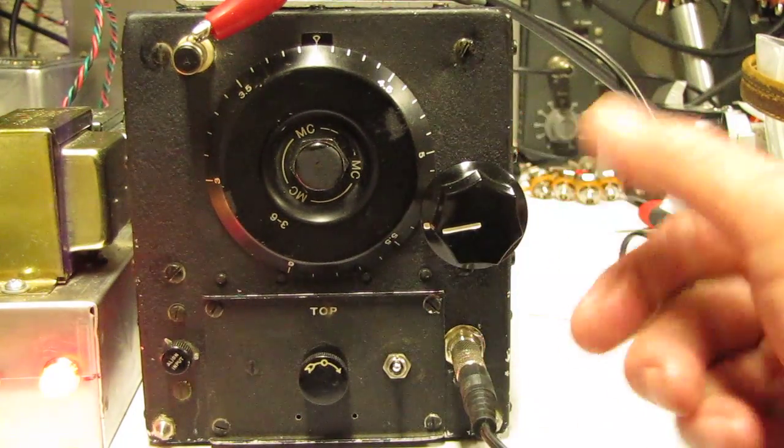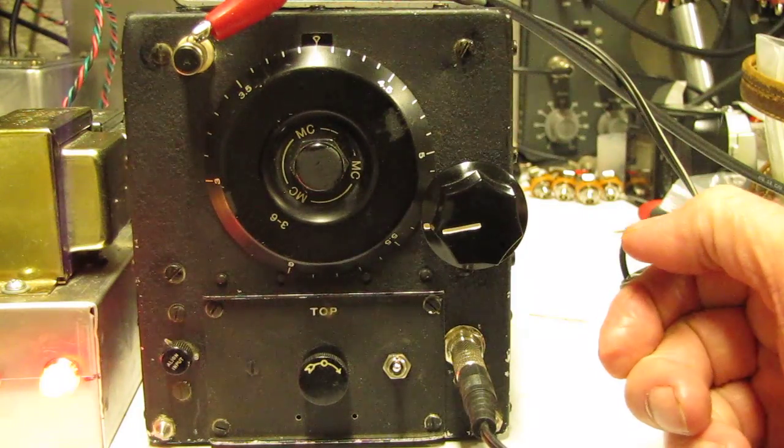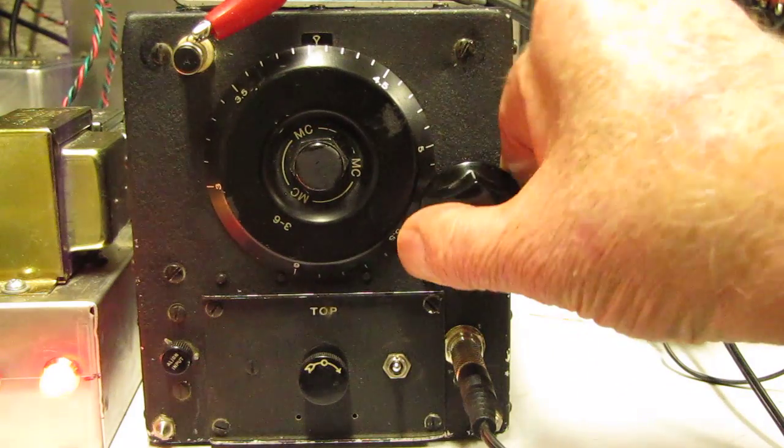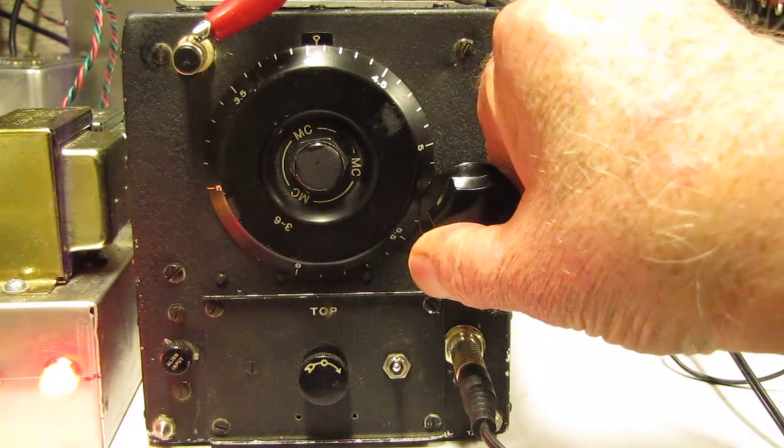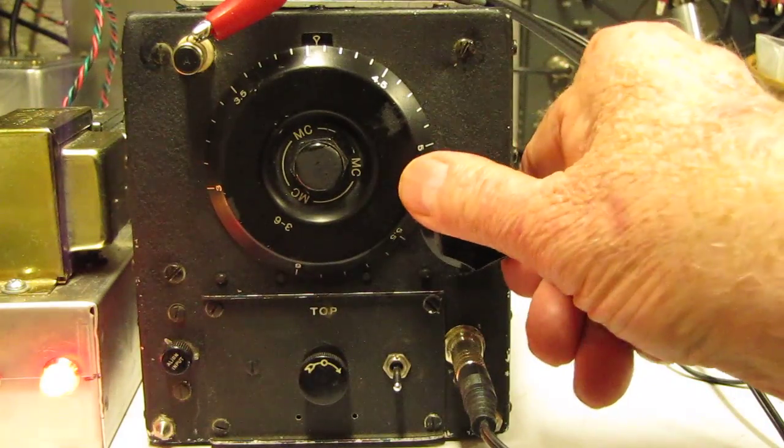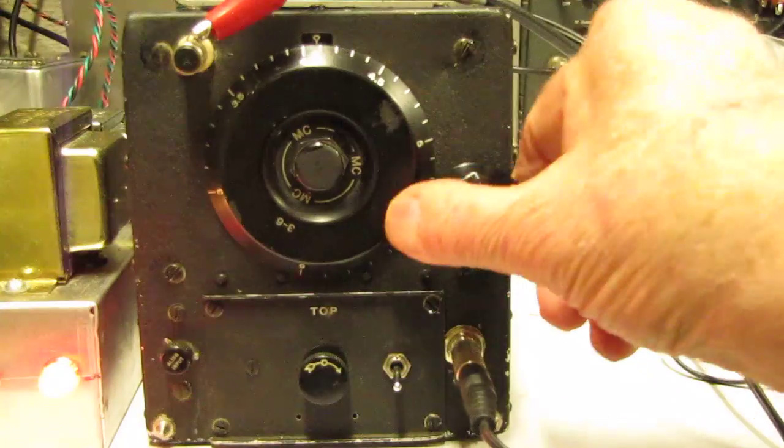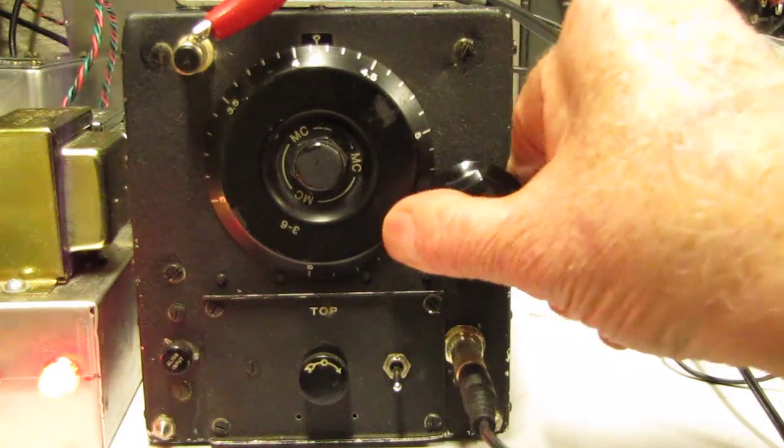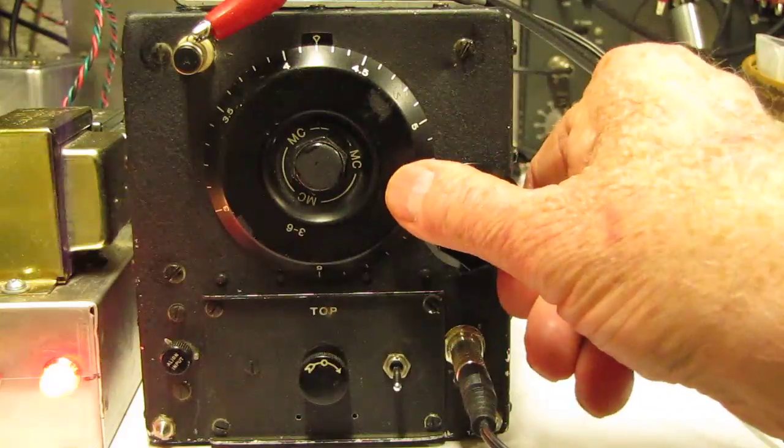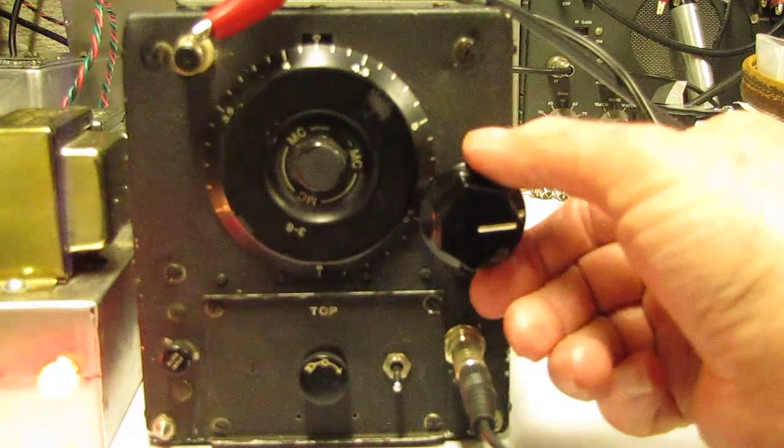This is outside the ham band. The ham band here ends at 4 MHz. And this is some sort of teletype signal. There's a shortwave broadcast station of some sort. More noise. Another shortwave broadcast station.